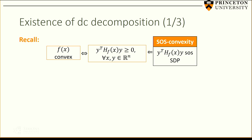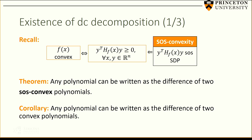On existence: I need to briefly explain SOS convexity. A polynomial f is convex if and only if y^T H(x) y is non-negative for any x and y in R^n, where H is the Hessian. We can replace the non-negativity condition by a sum-of-squares condition. We call f SOS convex if this is satisfied — it's a sufficient condition for convexity, checkable via semi-definite programming. The theorem we have is: given any polynomial f, you can find two SOS convex polynomials g and h such that f = g - h. As a corollary, any polynomial can be written as the difference of two convex polynomials.